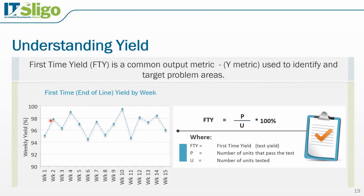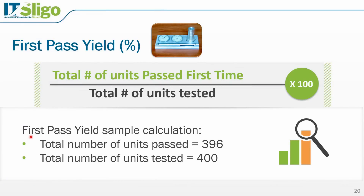Understanding yields: the first time yield is a common metric and we can plot it on a run chart — 94%, 98%, 96%, and so on — for each week you could plot your yield, or ideally even do it by the hour or by the day. It's the total number of units that passed the test over the total number of units tested, multiplied by 100%. Taking our pen holder example, let's say we tested 400 of them and 396 passed, so our first time yield is 396 divided by 400.